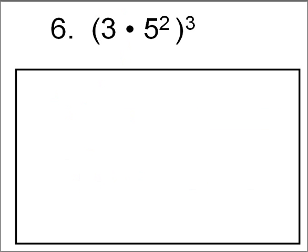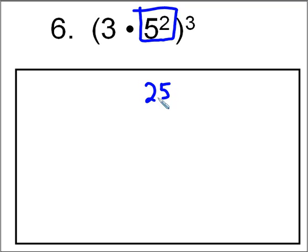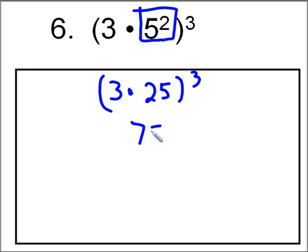In problem number six, I have in parentheses three times five squared, and then outside parentheses I'm raising that to the third power. To do this, I'm going to work inside the parentheses. I'm going to go ahead and do five to the second power and I'm going to get 25. And I'm going to put that times three in parentheses, and I'm raising that to the third power. So staying inside parentheses, I'm going to get 75 to the third power.